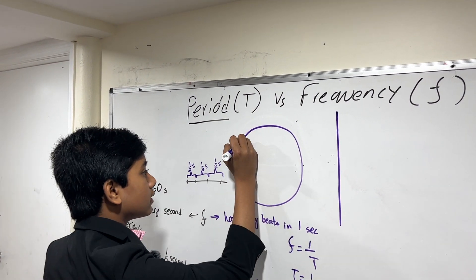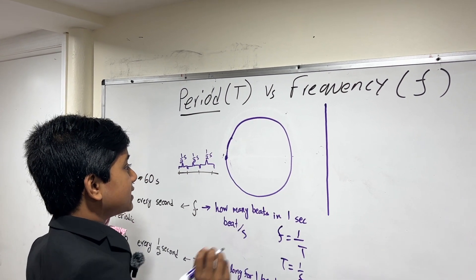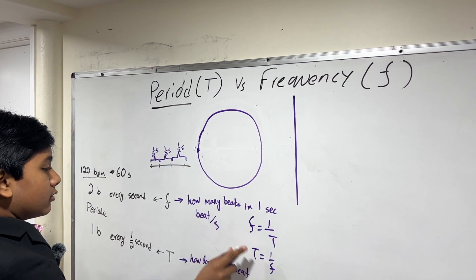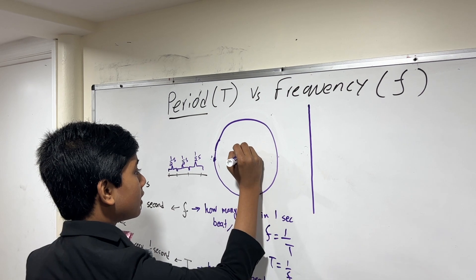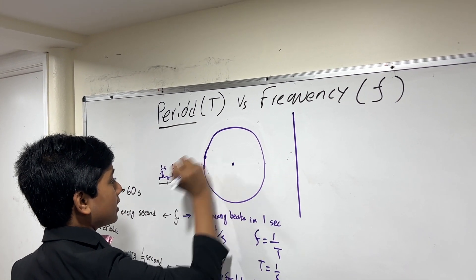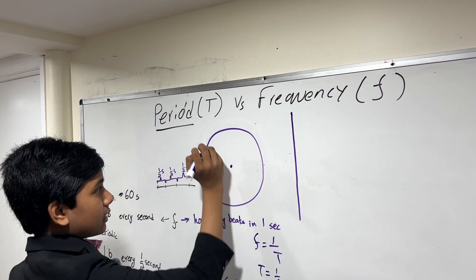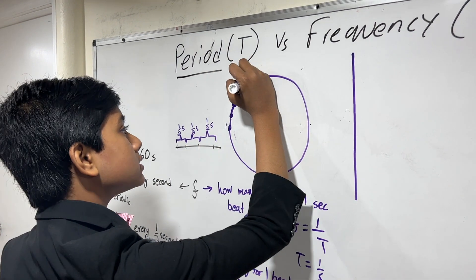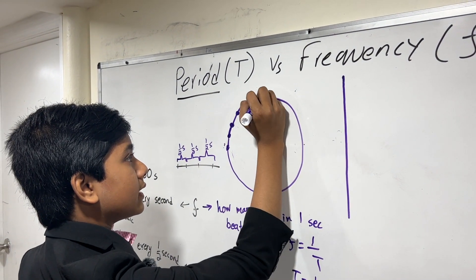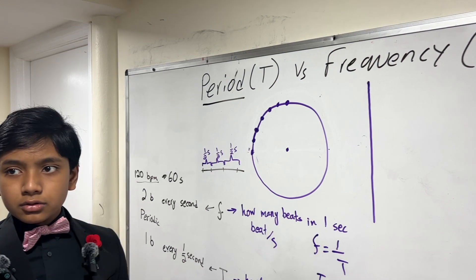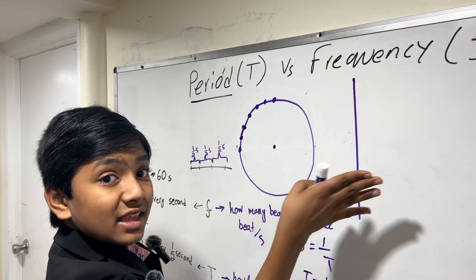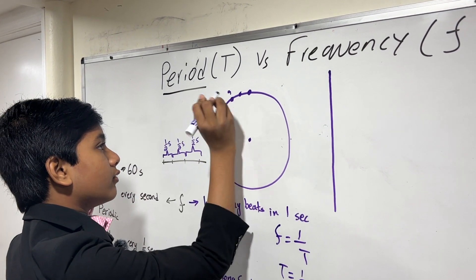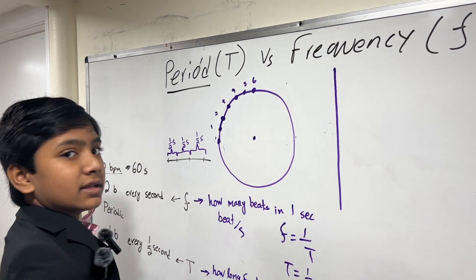So, that means that he covers an equal amount of distance every single second, just like we covered an equal amount of time. Let's say this is how much he covers in one second. Then Refath covers this much in the next second, and then this much, and this much, and this much, and this much. So, now, let's project all those points onto this line right over here. So this is 1 second, 2 seconds, 3 seconds, 4 seconds, 5 seconds, 6 seconds.